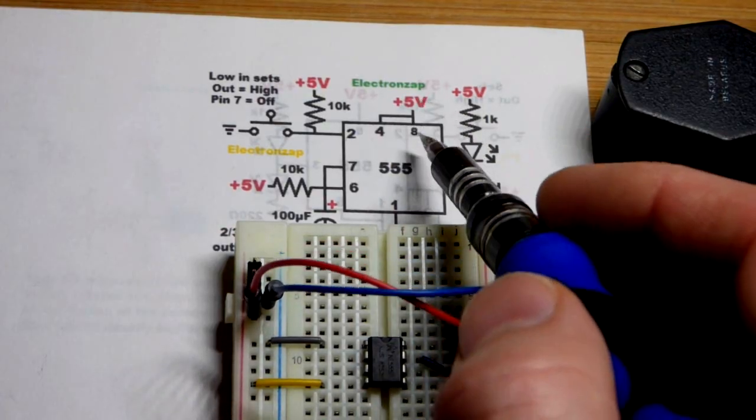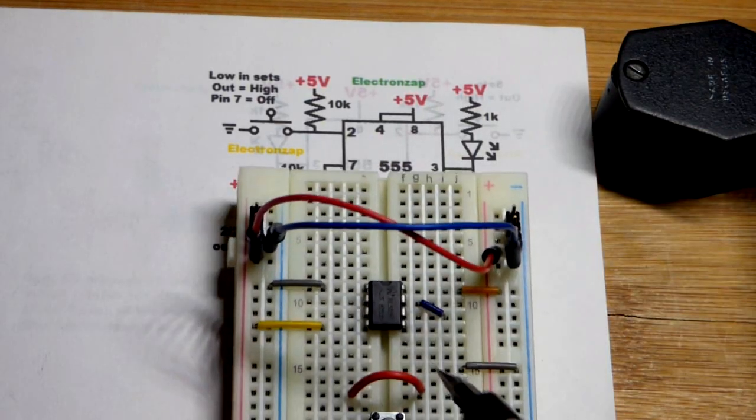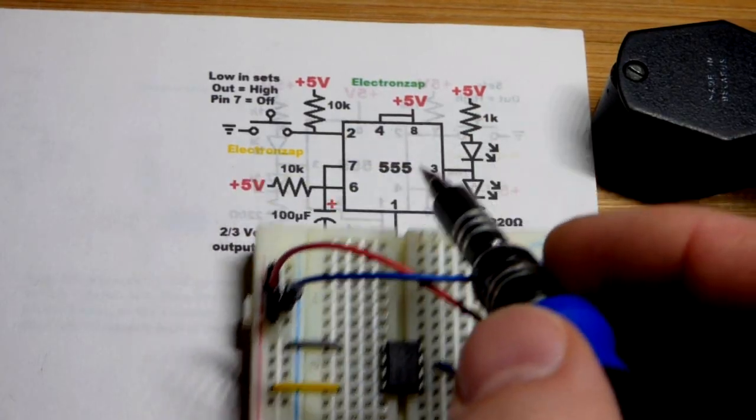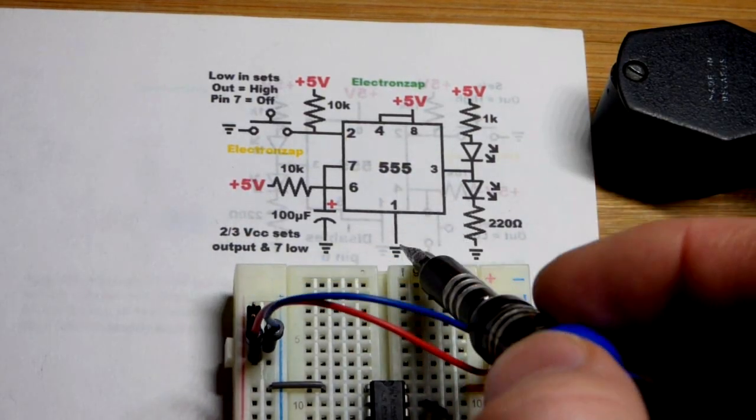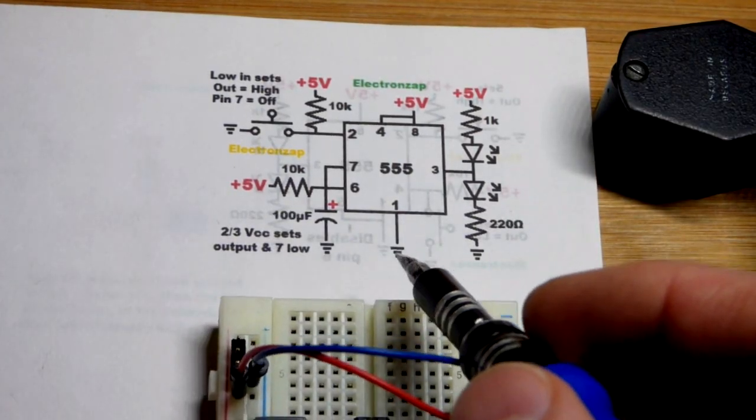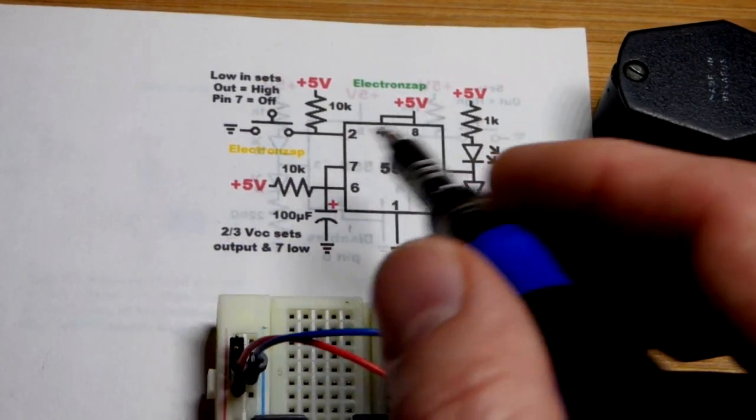So we have eight right there. That's the positive supply. Usually would probably be VCC on a sheet or something, may say V plus. But in any case, that's pin eight. Now we have pin number one, that's to the negative supply right there.